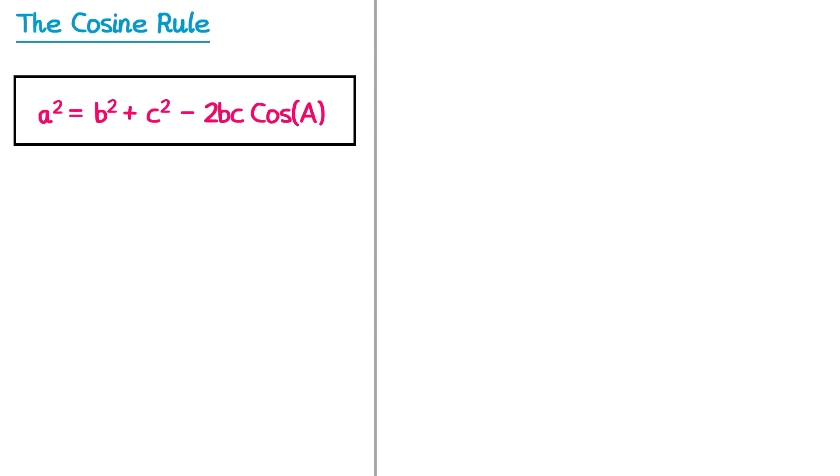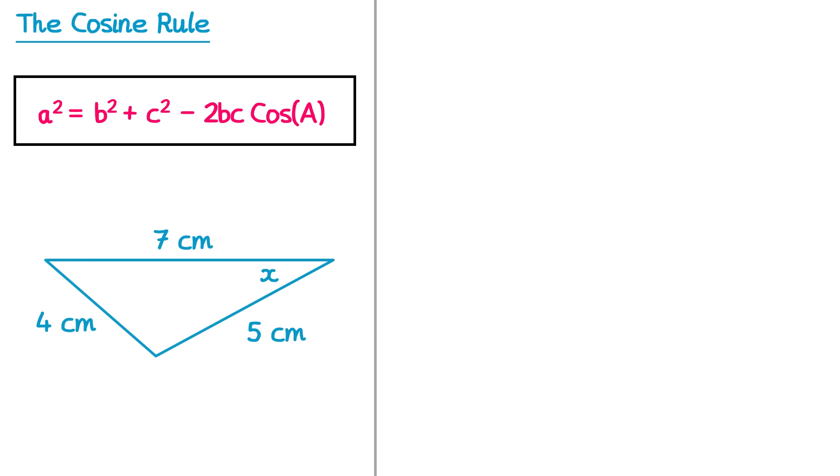Now the cosine rule can also be used to find missing angles in triangles, like this question here. In this question we've been given all of the sides but none of the angles — we can use the cosine rule to find any of those angles, and in this question we've been asked to find the one labelled x. We're going to start by labelling the triangle: we're going to label x as capital A, since that's the one we're trying to find. The side that's opposite this, so that 4 cm, must be the lowercase a. The b and c don't really matter which way round they go, so I'm going to put b by the 7 and c by the 5. Now when you use the cosine rule to find an angle, we actually need to use a rearrangement of this formula, so I'm going to show you how you can work that out now.